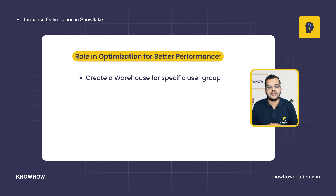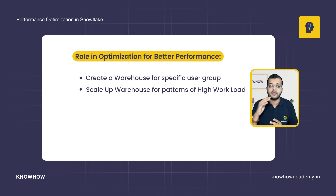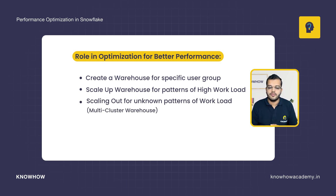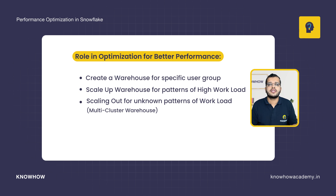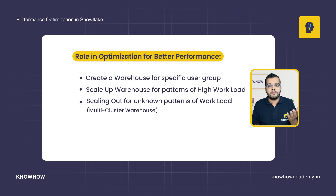The second point is we need to scale up. We have something called scaling up and scaling down. We have to scale up the warehouse for patterns of high workload — depending upon the size of the workload in Snowflake, we scale it up for better performance. We also have to scale out. For example, if you do not know the size of the data, the number of data warehouses, or how many cluster keys to use, then for these unknown patterns, we have to have the scale out option, which means using multi-cluster warehouses.